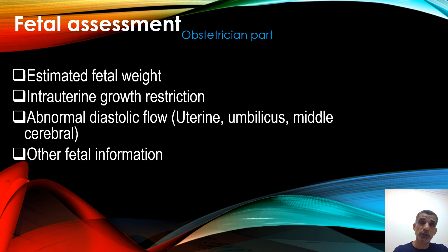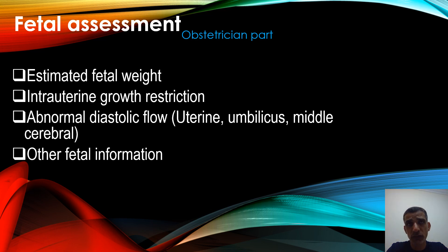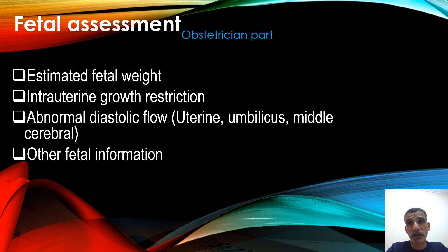The obstetrician's documentation should also include fetal assessment. The obstetrician should provide an estimate of fetal weight, whether there is intrauterine growth restriction, and details on diastolic flow — not just 'normal or abnormal' but specific values: absent, reverse, or normal, measured in three arteries: uterine, umbilical, and middle cerebral. If the uterine artery is abnormal, that indicates maternal medical conditions affecting the pregnancy; if the uterine is normal but the umbilical is abnormal, that indicates a placental problem. If the middle cerebral artery becomes abnormal, delivery should be imminent.